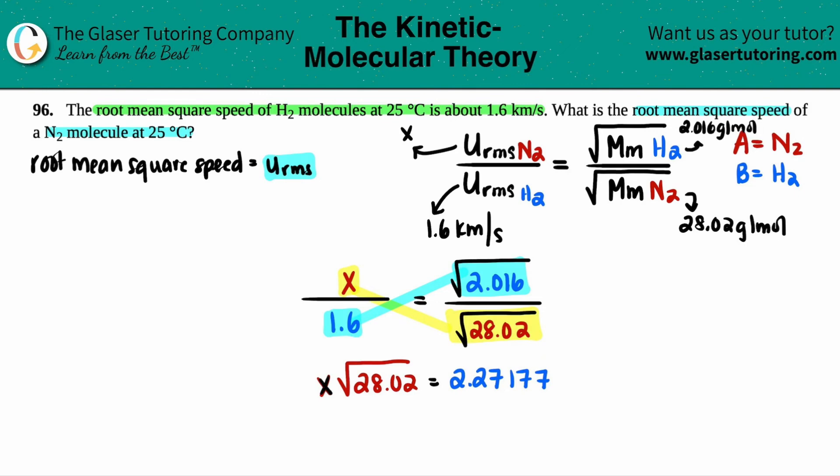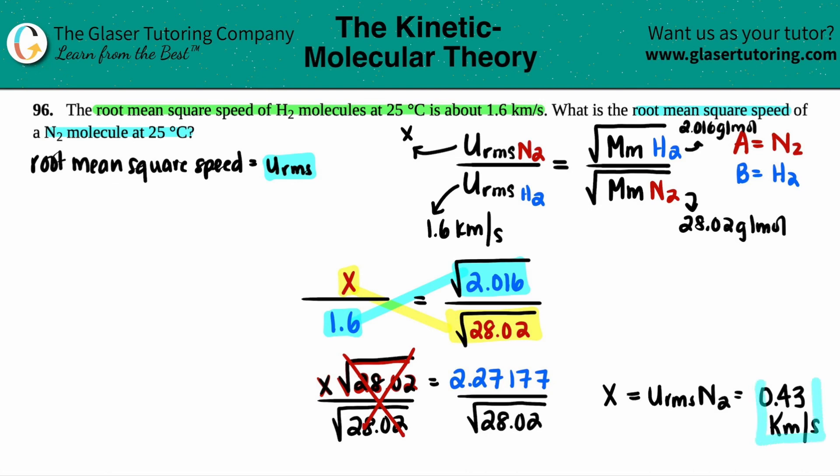And then, since you want X by itself, we're going to divide on both sides by the square root of the 28.02. This would cancel. We're left with now X, which is the root mean square speed of N2. And then, let's just do that number. 2.27177 divided by the square root of 28.02. And looks like they gave me two sig figs. So, we'll give two sig figs back. 0.43. And since the root mean square speed for H2 is in kilometers per second, this also has to be in kilometers per second. And we are done.